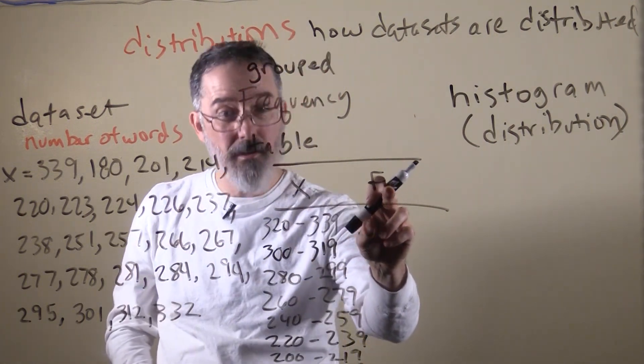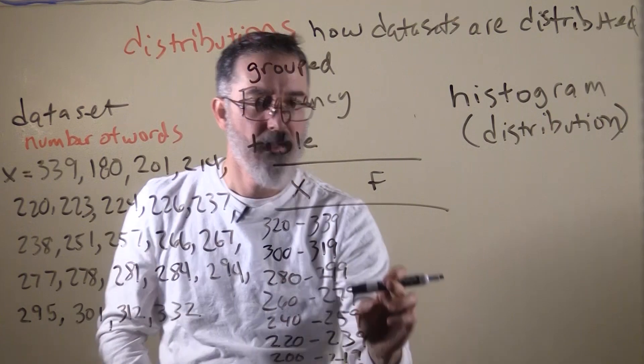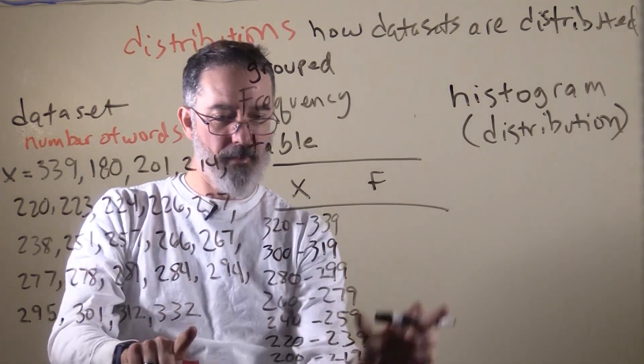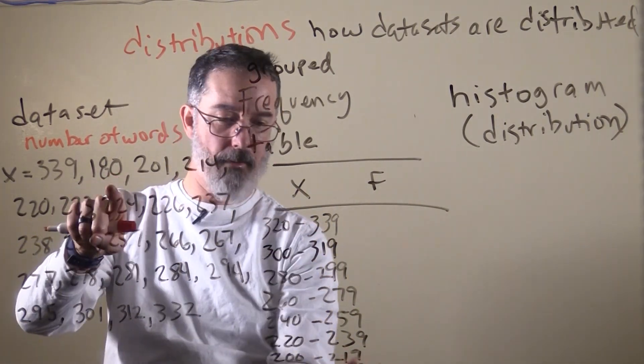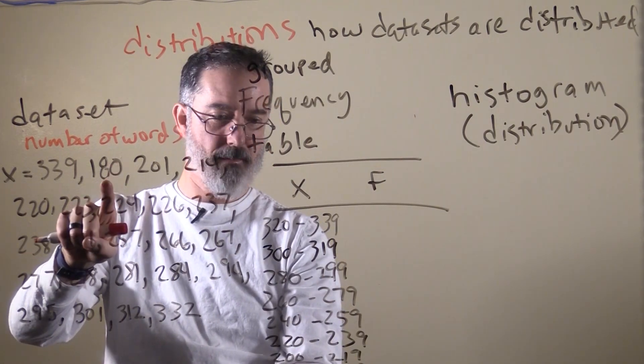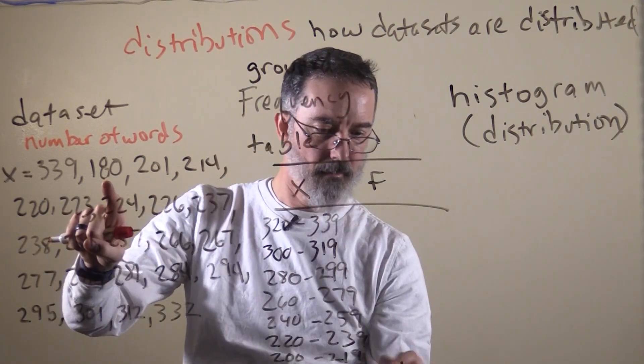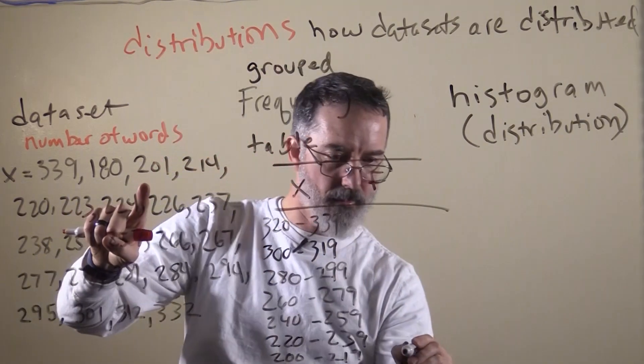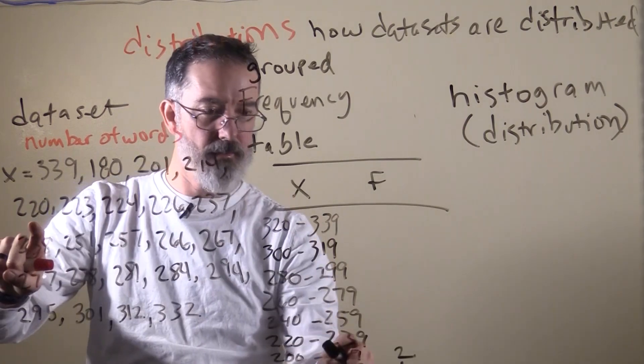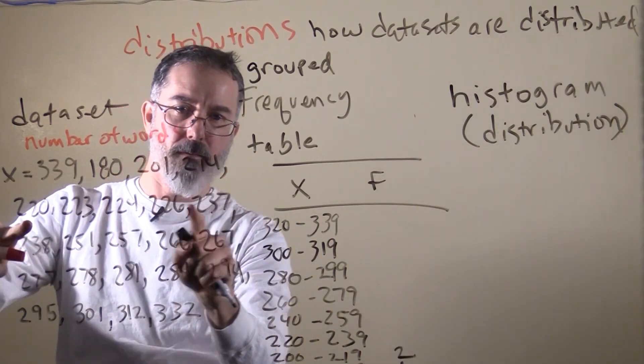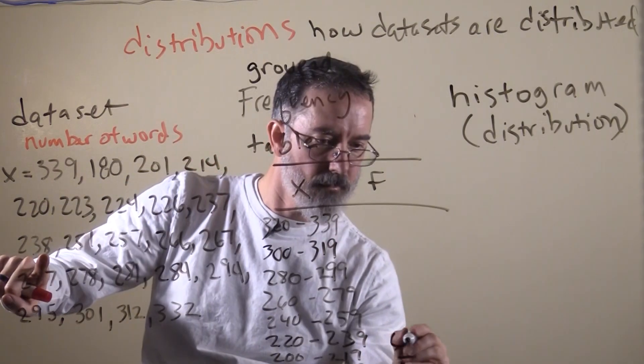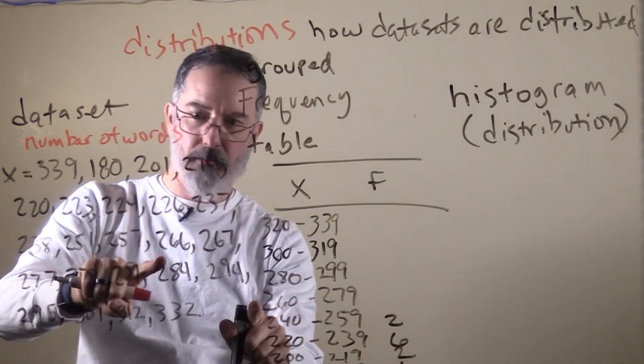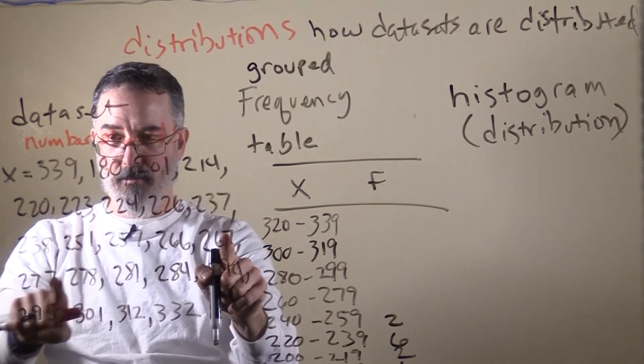So now we need to figure out the frequency, the number of scores that fit within each one. So if we start with 320 to 339, maybe I will start at the bottom. It might be easier, because then we can just go left to right. So between 180 and 199, there is just this one score. So for that interval there is only one score. Between 200 and 219, we have 1, 2. There are two scores. Between 220 and 239, 1, 2, 3, 4, 5, 6. Six scores there. Between 240 and 259, 1, 2. There are two scores there.